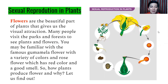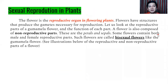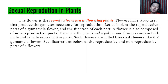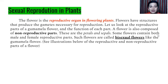How do plants produce flowers, and why? In sexual reproduction of plants, the flower is the reproductive organ of flowering plants. For ornamental plants that bloom, the flower is automatically the reproductive organ. Flowers have structures that produce the gametes necessary for reproduction.